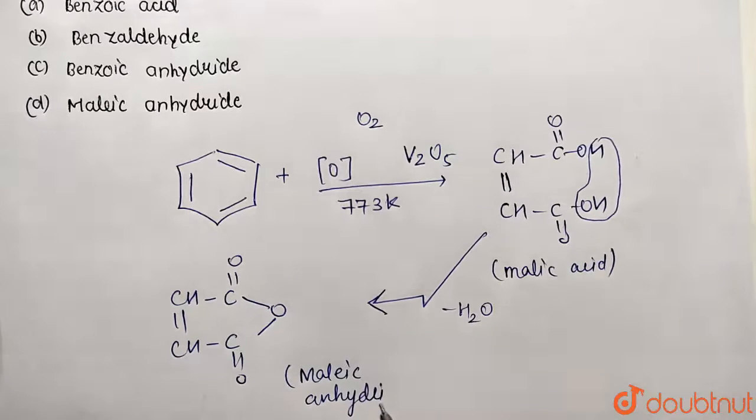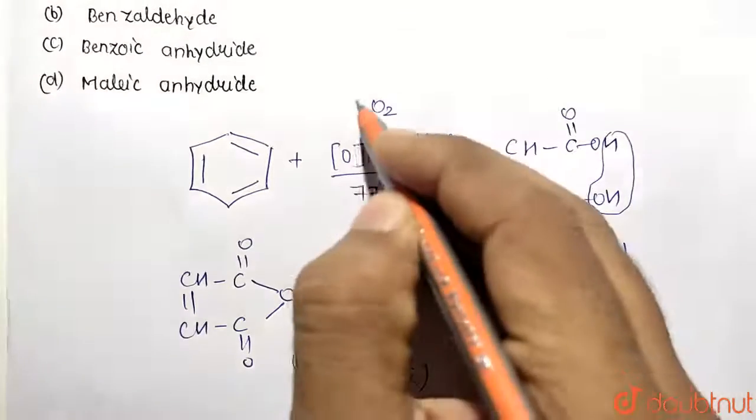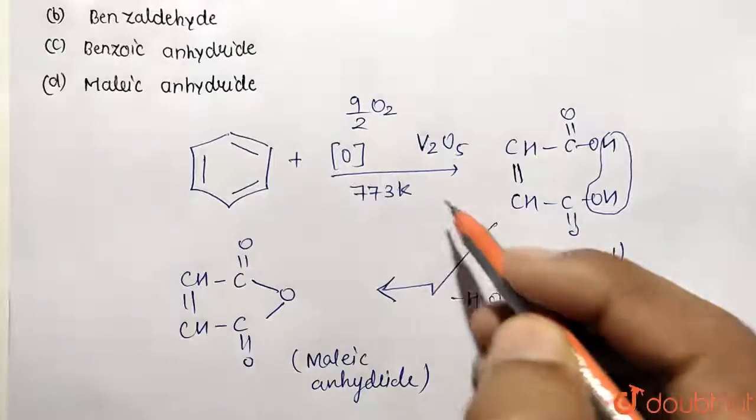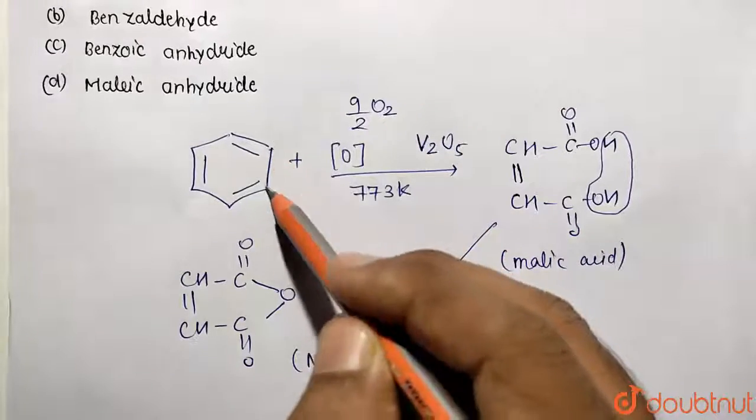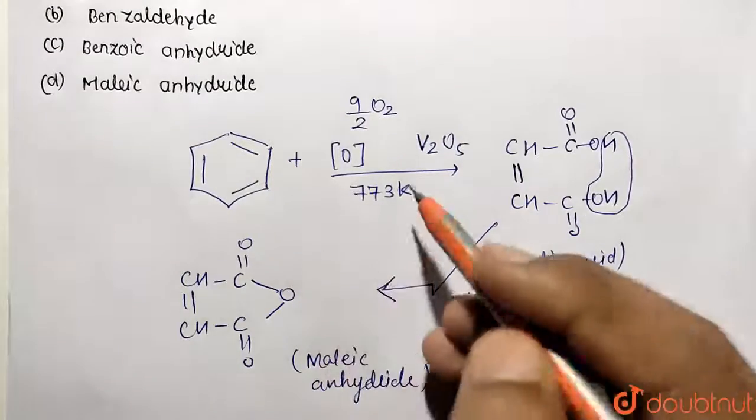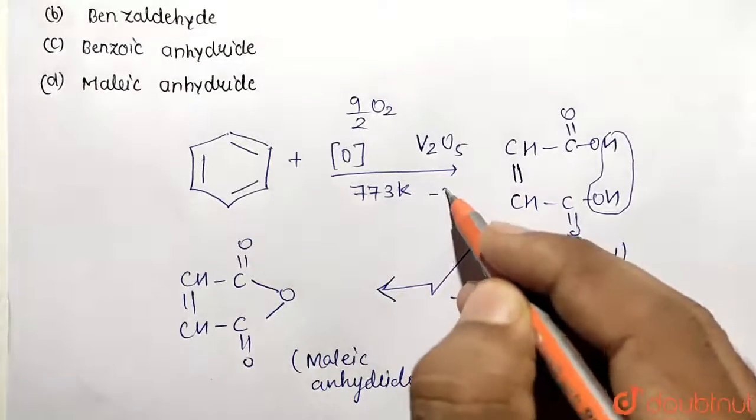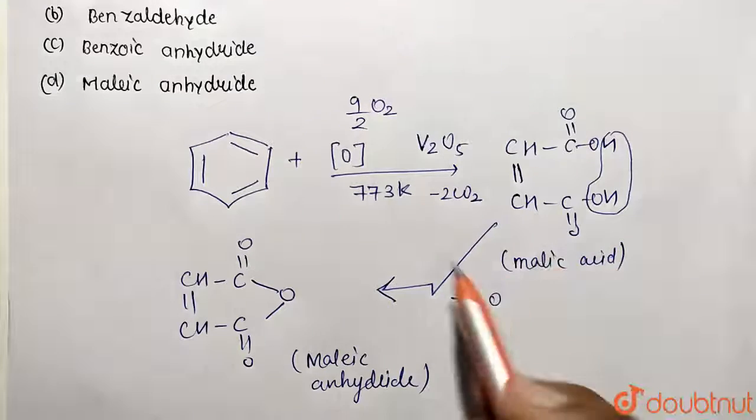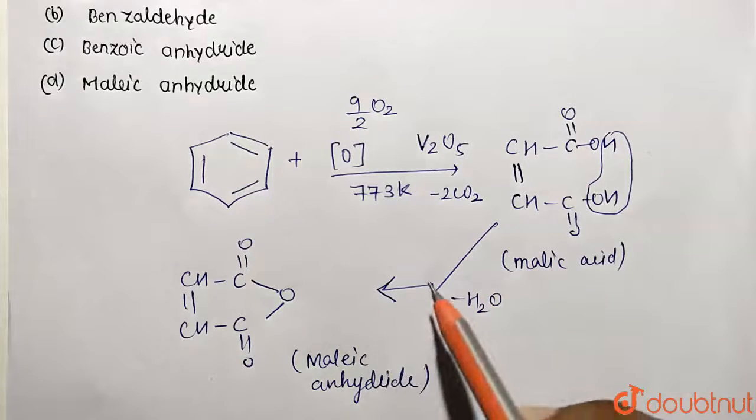So this was the answer for the given question. If you complete the given reaction, this is going to be 9 by 2 moles will be used, and correspondingly C and C will be removed out in the form of CO2. So you can also write like 2 CO2 molecules was removed. And this was the common sequence of the reaction that is being followed.